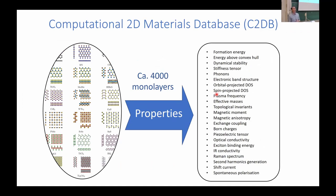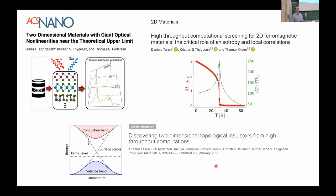For about 4,000 of these monolayers, we have computed a rather long list of different properties. The latest properties added include second harmonic generation, shift current — another second-order optical response function — and spontaneous polarization calculated via the Berry phase. Once you have such a database, you can mine it and look for interesting materials. We've been looking at 2D materials with particularly large nonlinear optical properties, 2D materials with non-trivial topologies, 2D ferromagnetic materials, and many other things.